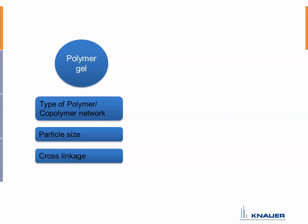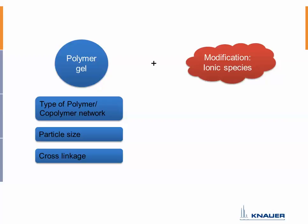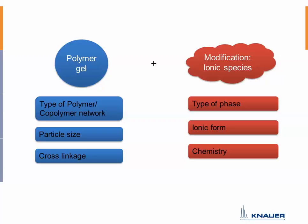On the other side there is also the modification. For these columns we are talking about ionic species — the characteristic that is brought onto the polymer gel. This defines the complete type of your phase, and the ionic form and overall chemistry of this HPLC phase is defined by the modification. You have to know all these characteristics from both sides — the polymer gel and the modification — to know about the selectivity of your column.